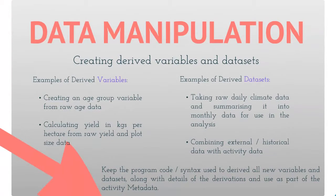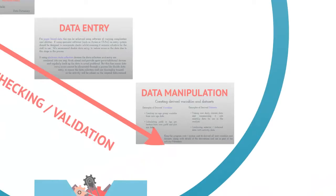Data manipulation is the creation of new or derived variables and data sets. Analysis usually involves derived variables — these are variables created or derived from those in the raw data. For example, the age of participants in groups rather than the raw exact ages, or yields in kilograms per hectare from the raw yield and plot size measurements. Similarly, entire derived data sets can be created, such as taking daily climate data and summarising it so that a new derived data set has the monthly averages used in the analysis, or combining the external or historical data with that collected by the activity. It is important to keep documentation detailing the creation of the derived variables and data sets, and you should keep the program code or syntax used to perform the manipulations as part of the activity metadata.